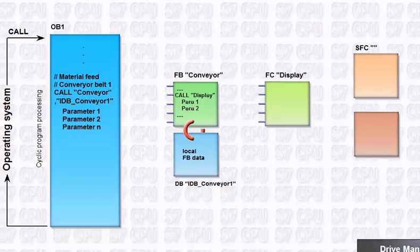System functions, or SFCs, are parameterizable functions integrated in the operating system of the CPU whose number and functionality are fixed. In this example, the current system time can be read from the operating system of the CPU via an SFC.